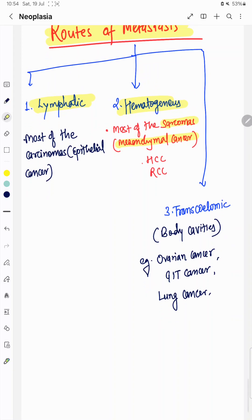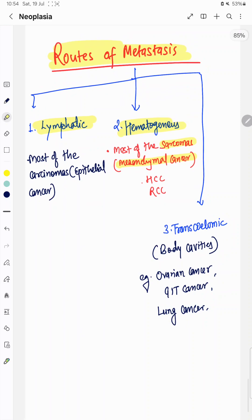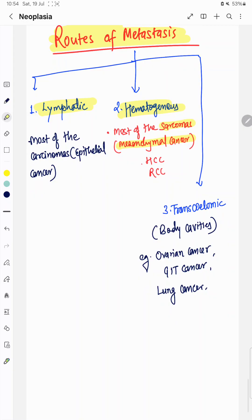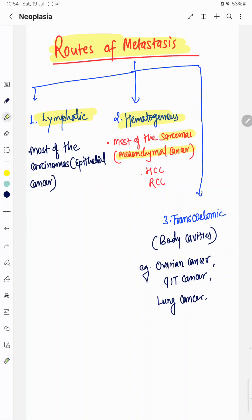Third is transcoelomic route through the body cavities, which is seen in ovarian carcinoma, cancer of the GI tract and lung cancer. These are the common routes of metastasis: lymphatic, hematogenous and transcoelomic. Thank you for your time.